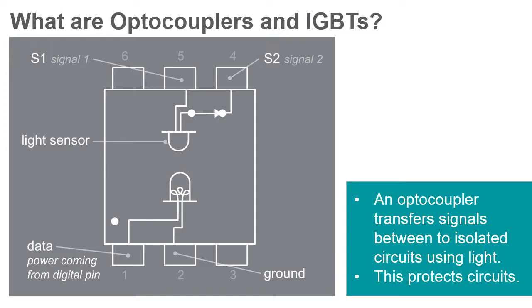This protects both circuits from possible faults originating in the other connected circuit. While primarily used for digital signals, there are specialty optocouplers developed specifically for analog signals.